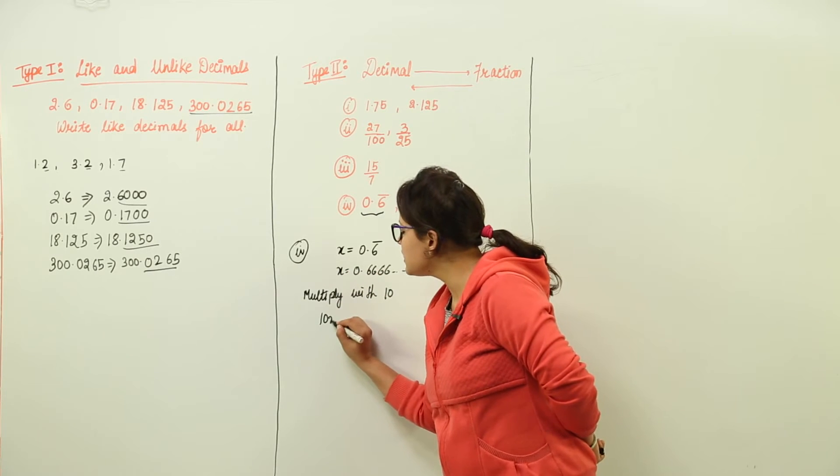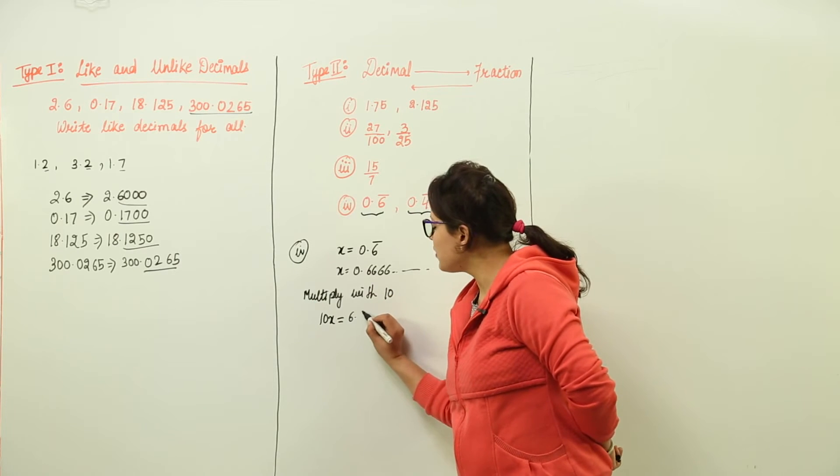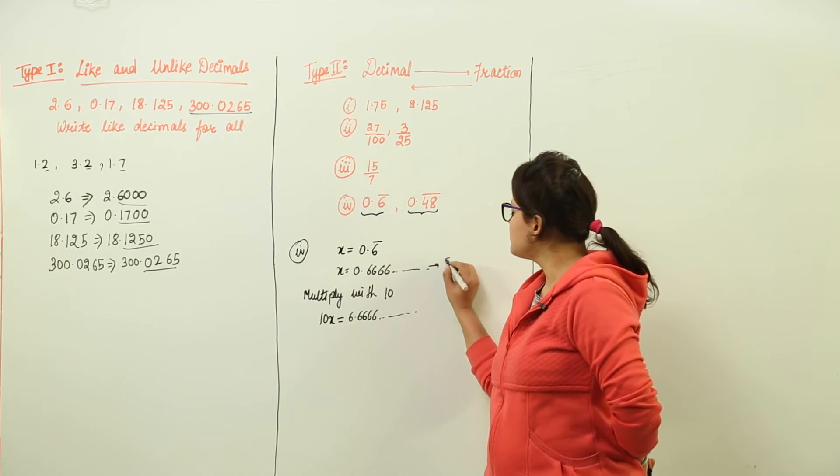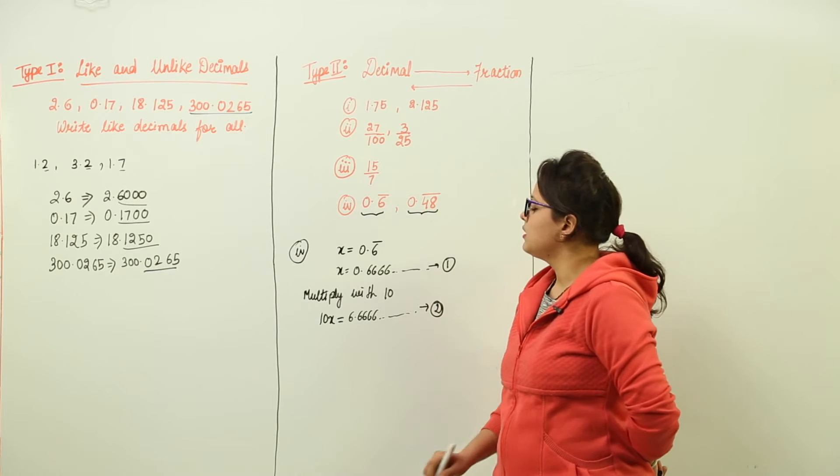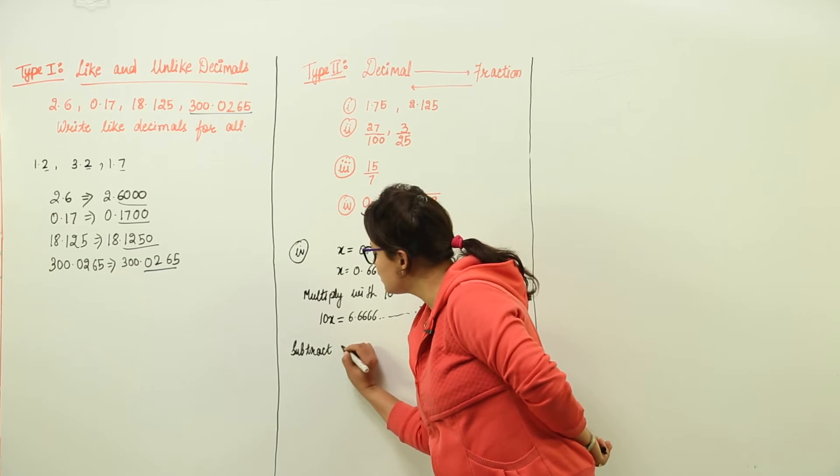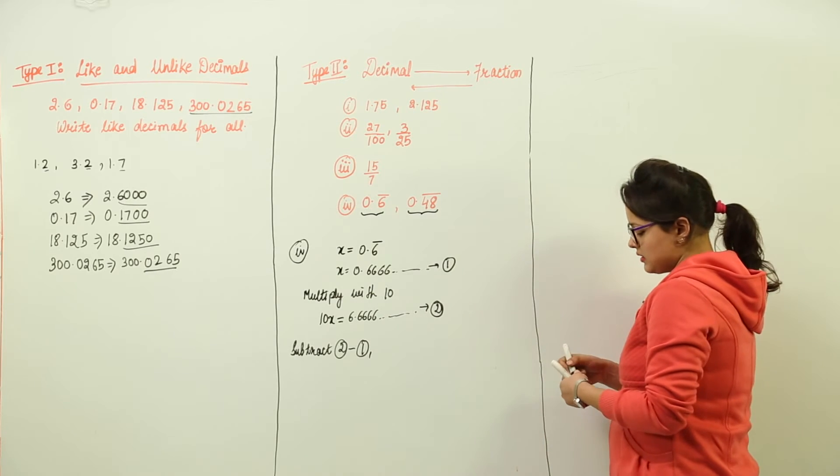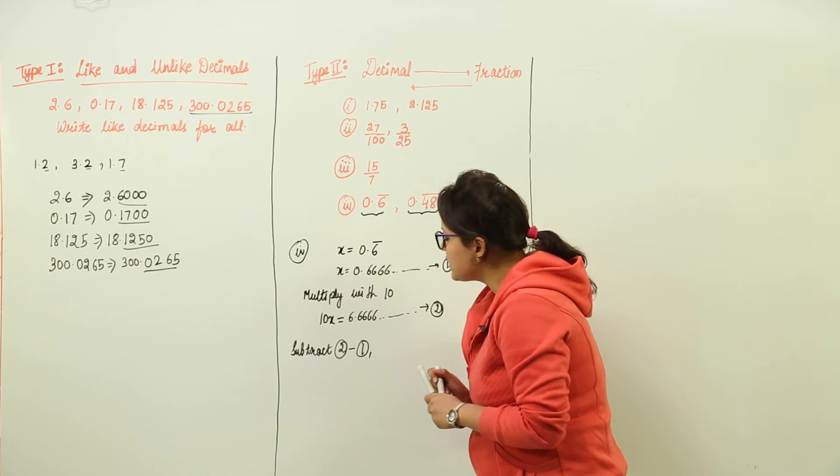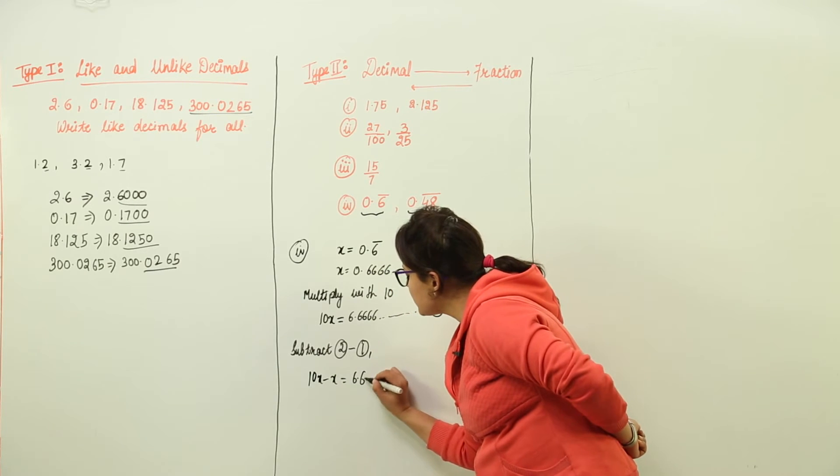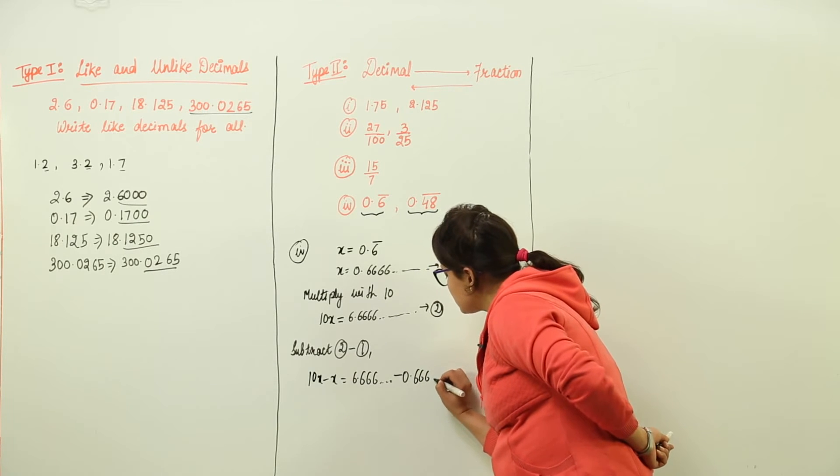What do I get? 10x equal to, and if you multiply this with 10, you get 6.6666 and so on. Now this is my first equation, this is my second equation. Now you have to subtract from the second equation the first equation. On subtraction, you would see that you get 10x minus x equal to 6.6666 so on, minus 0.6666 so on.